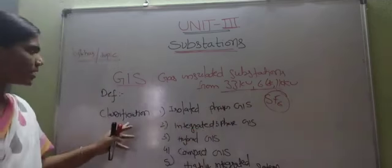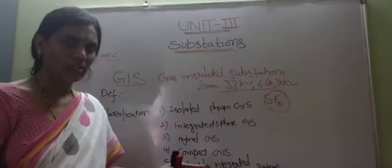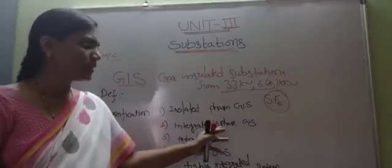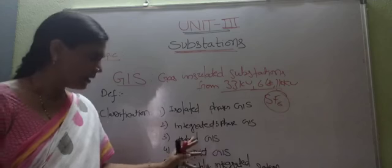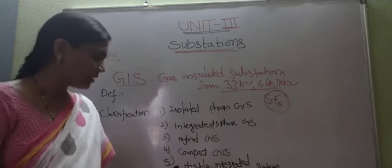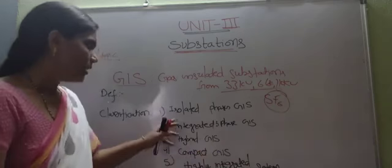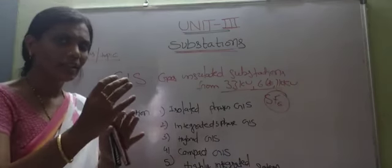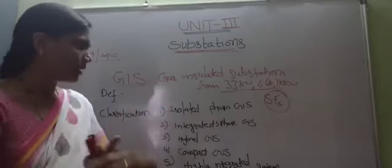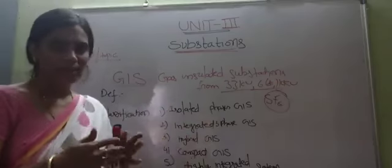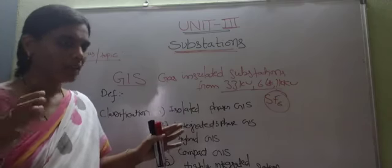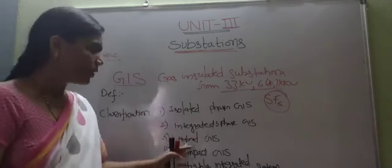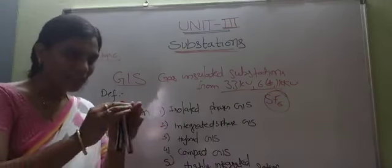Next one is classification of GIS. There are different types of GIS substations. Isolated phase GIS, integrated three-phase GIS, hybrid GIS, compact GIS. Very small in size, compact, very small in size.